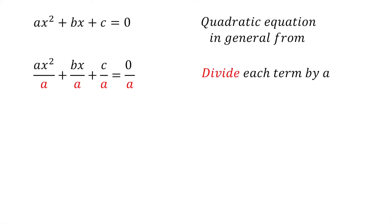The first thing we need to do is divide each term on both sides of the equation by a. We do this because we want the coefficient of x squared to be 1 before we complete the square, as this will make the factorisation easy.